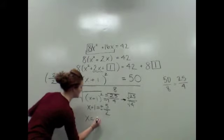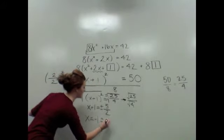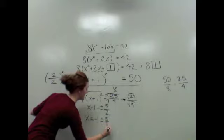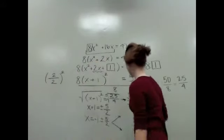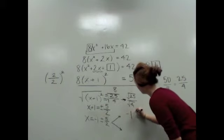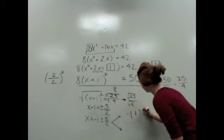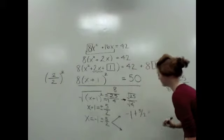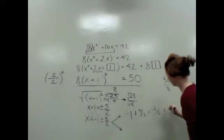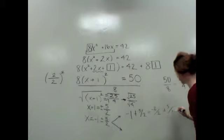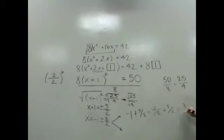Now because these are nice numbers, because they're not left in radicals, we can go further. We have -1 + 5/2. Well that's really -2/2 + 5/2, which is equal to 3/2. There's one of our answers.